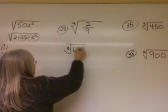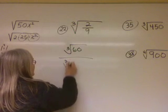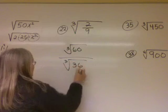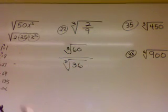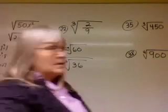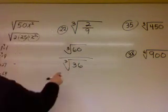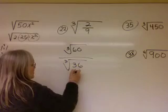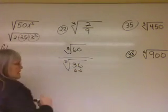Cube root of sixty over cube root of thirty-six. Now, neither one of those is perfect cubes.